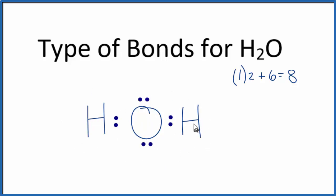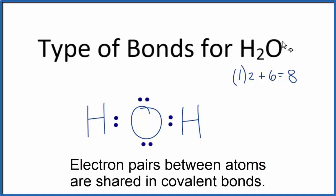For H2O we draw a Lewis structure because we have two nonmetals. When you have two nonmetals, you'll have a covalent bond, also called a molecular bond. So the type of bond between the oxygen and the hydrogen is a covalent or molecular bond.